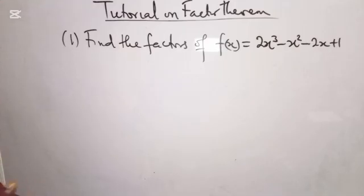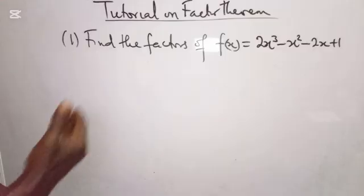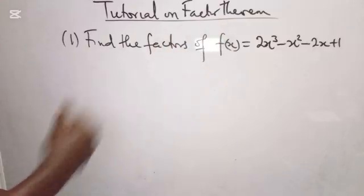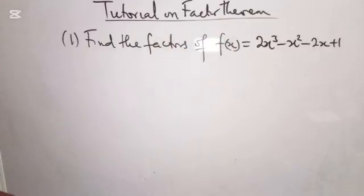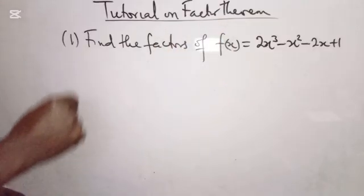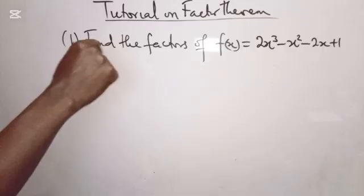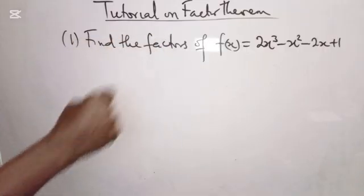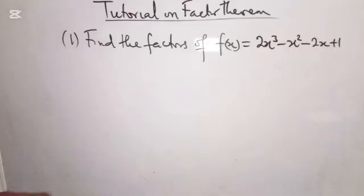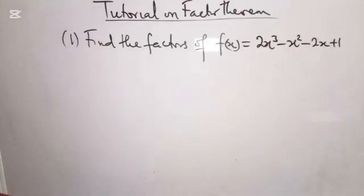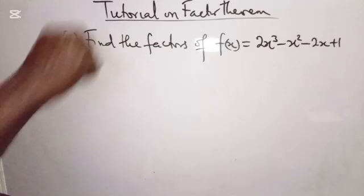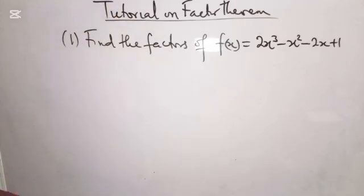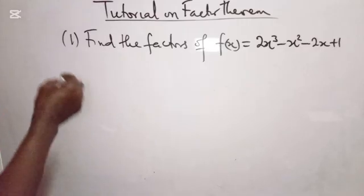We're going to use what we call the trial and error method to find the factors of this polynomial. That means you assume some values for x. If when you assume such values for x the polynomial is equal to zero, that means that value is a factor — it can divide this polynomial.